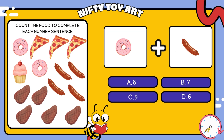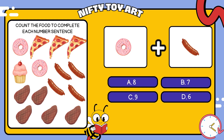We have donuts and sausages. How many foods is that in total? That's right, six.